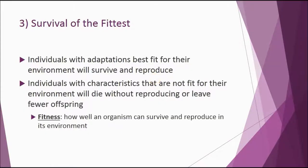Individuals with characteristics not fit for their environment will leave fewer offspring. That leads us to a term called biological fitness. Biological fitness is essentially how many offspring you can leave to the next generation — how well you can survive and reproduce. An animal that has more offspring would be considered more biologically fit. It is not the strongest that survive — it's whoever leaves the most offspring. All three of these things lead to natural selection happening.